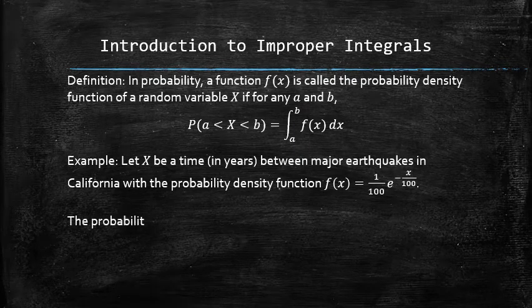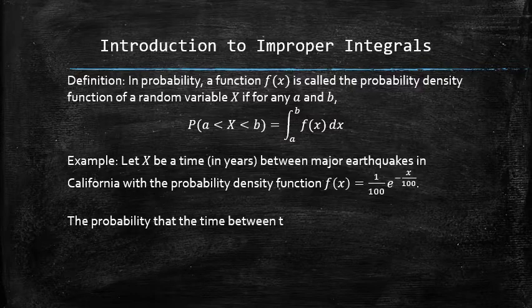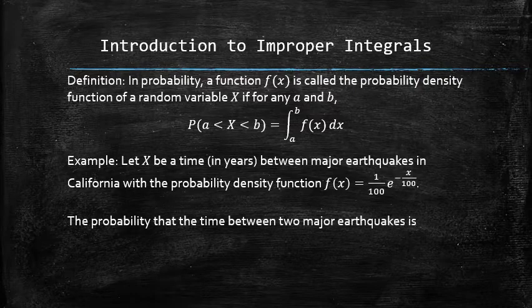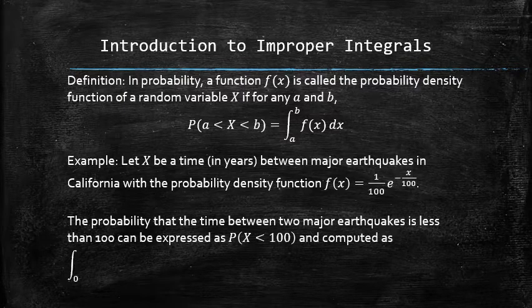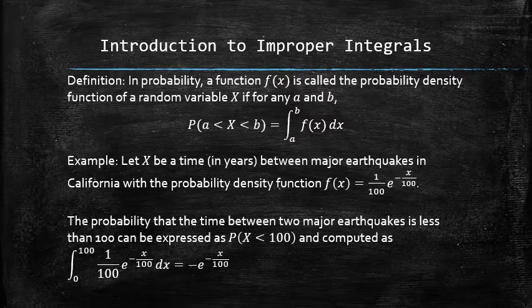Similarly, the probability that the time between two major earthquakes is less than 100 years can be expressed in the following way and computed as the following definite integral with the lower limit 0 and the upper limit 100.